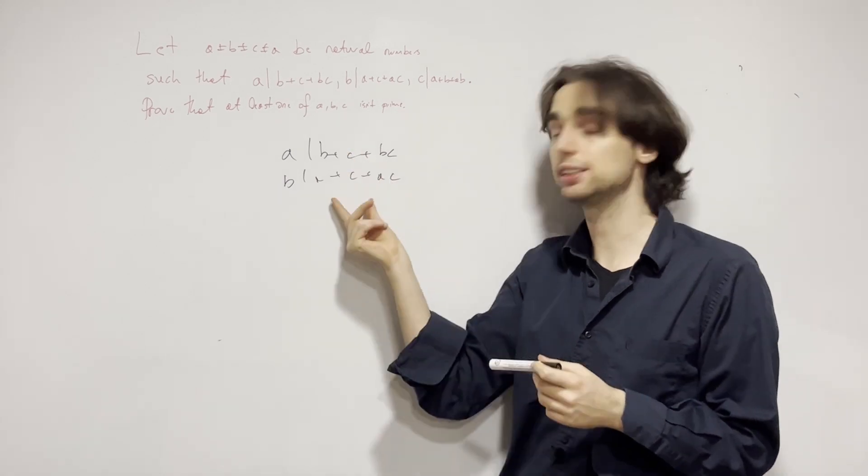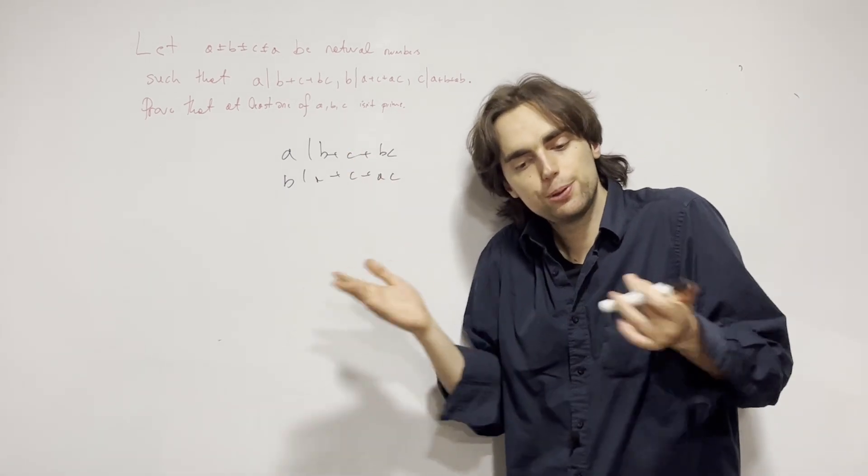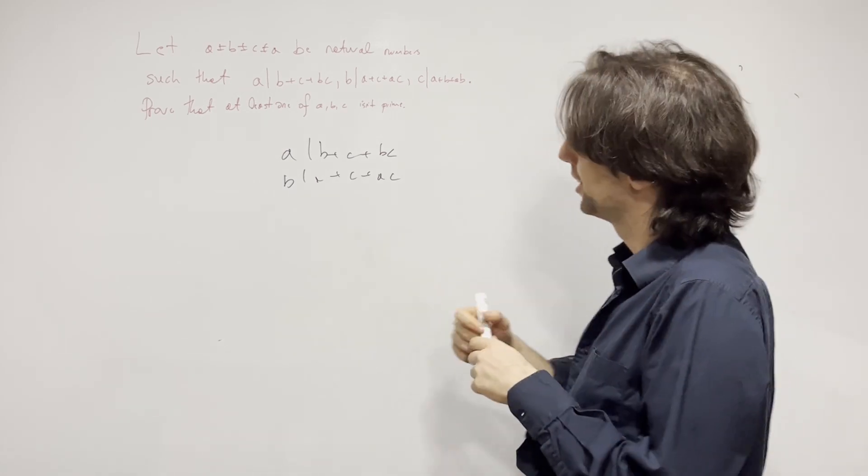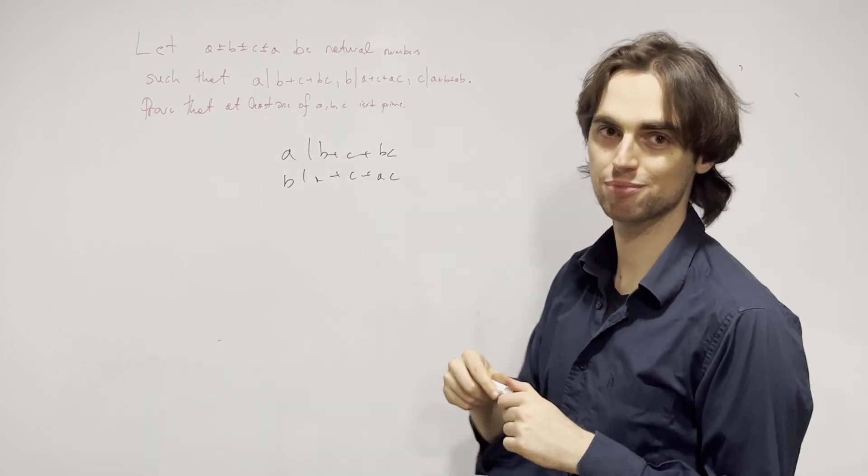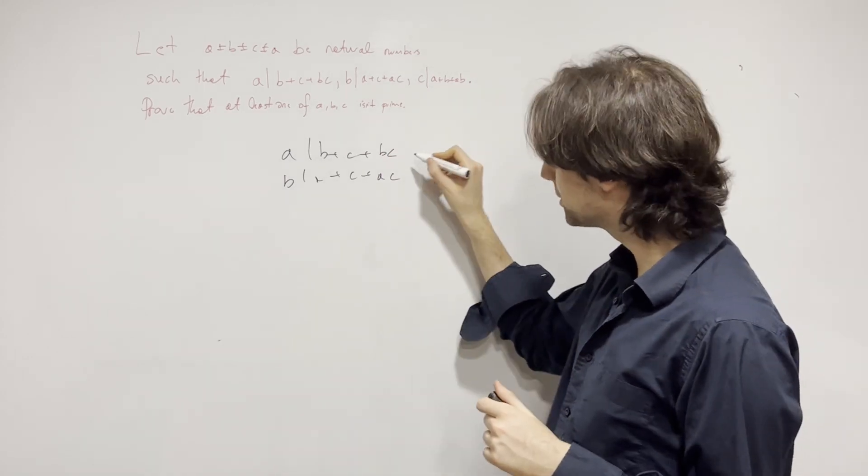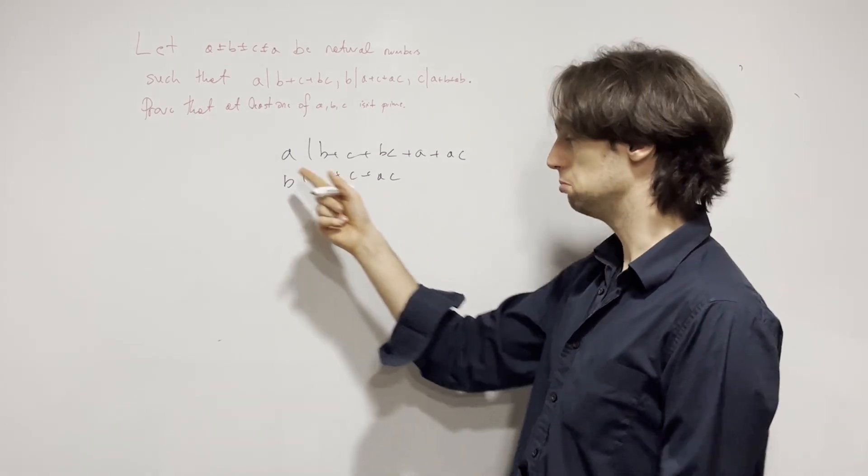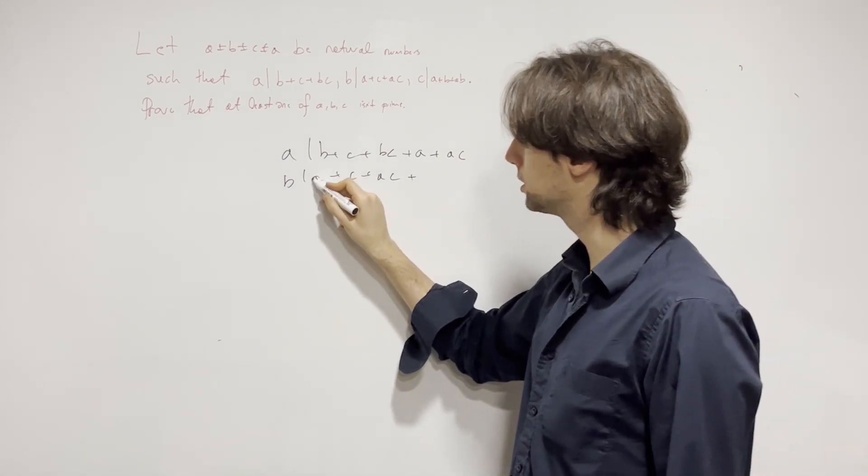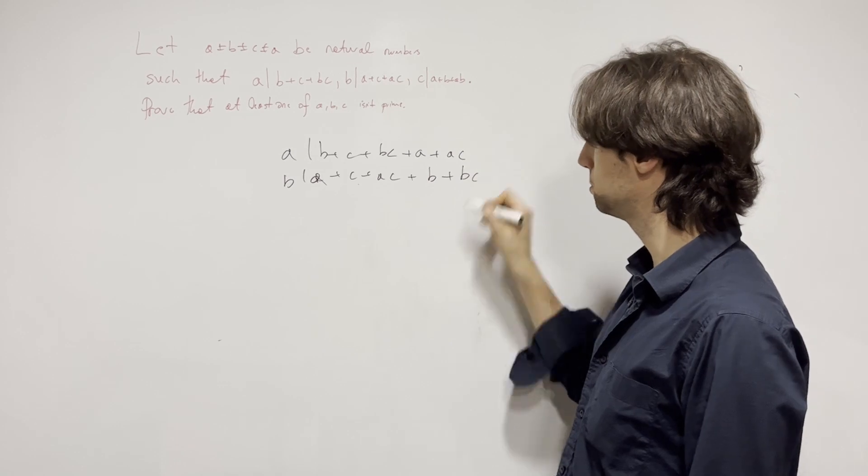Here's what you can do. From A divides B plus C plus BC, B divides A plus C plus AC. The problem is, these two things are not the same. If A divides X and B divides X, we could have A times B divides X, which is stronger. So, how can I make this the same?